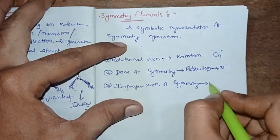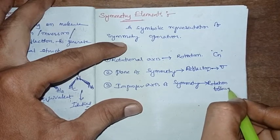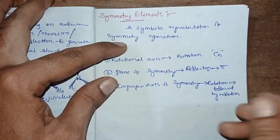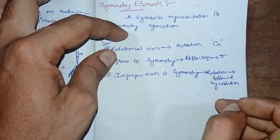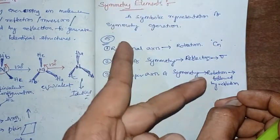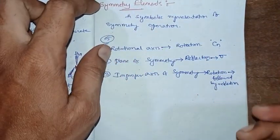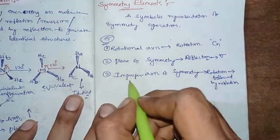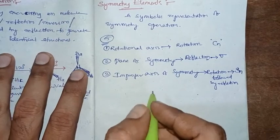The third symmetry element is the improper axis of symmetry. The symmetry operation here is rotation followed by reflection, or reflection followed by rotation — two operations combined. The sequence can be either rotation then reflection, or reflection then rotation. This combined operation is symbolized as Sn, and is also called the rotation-reflection axis or reflection-rotation axis.